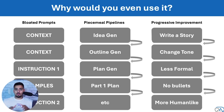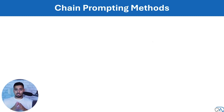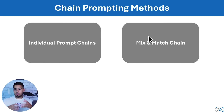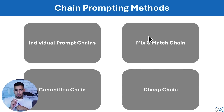Chain prompting is super helpful at breaking down complex tasks into small, digestible stages where you can also do quality assurance per stage — seeing where hallucination happens and where quality is degrading. There are four implementations I want to walk through: individual prompt chains, the mix and match chain — probably one you haven't seen before but very powerful — the committee chain, which is expensive but very exhaustive, and the cheap chain — you'll understand why it's called that when I get there.